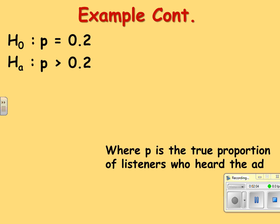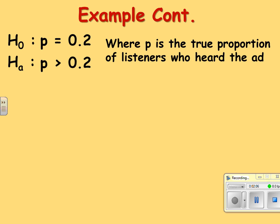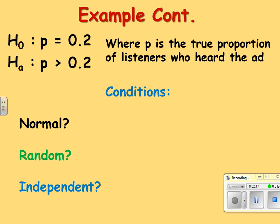That's the one the company wants to see if there's evidence for. So they want to see are we going to reject H0 or not. So we must define, just to be clear, especially in this case when the P can mean so many different things, this is defining the parameter. So make sure you do that for any significance test. P, of course, is the true proportion of listeners who heard the ad.